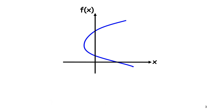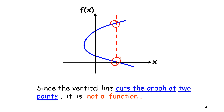For the second graph, when we draw a vertical line it cuts at two points — one and two. Therefore, the vertical line cuts the graph at two points, so it is not a function.